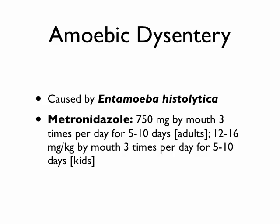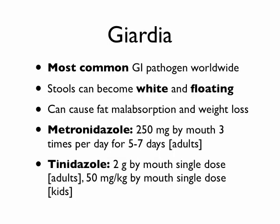Now let's talk about a couple of special situations. Amoebic dysentery is pretty common worldwide, and if you've spent time overseas you may have been exposed to it. It's caused by Entamoeba histolytica, and the treatment is metronidazole — a different type of antibiotic that won't work on E. coli and the other organisms listed earlier. Adult and pediatric doses are listed. Giardia is the most common GI pathogen worldwide. You can suspect it because it causes white, floating, foul-smelling stools, and it can also lead to malnutrition due to fat malabsorption. Treat it with metronidazole, or a recently approved alternative called tinidazole.